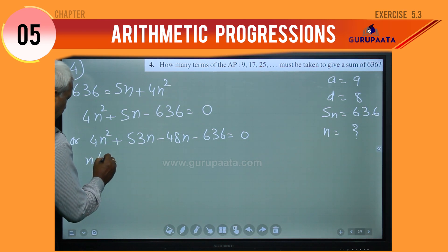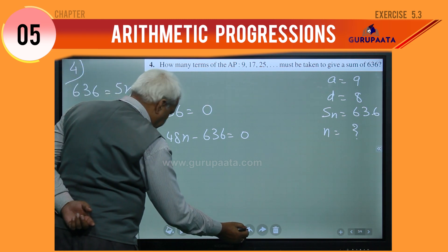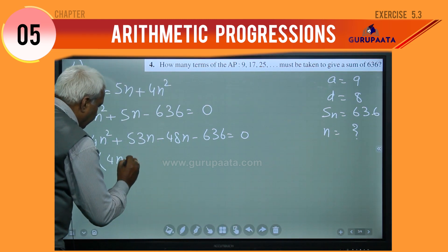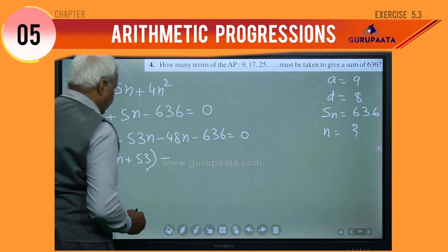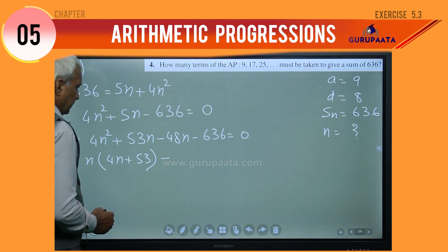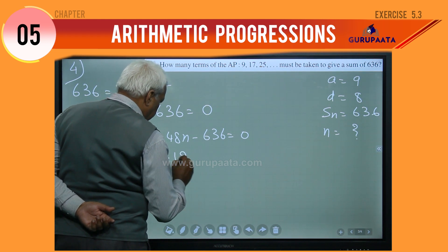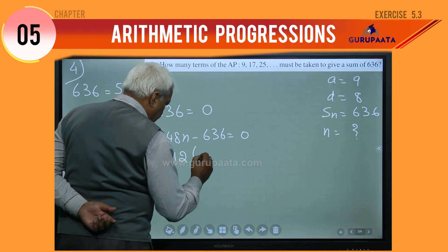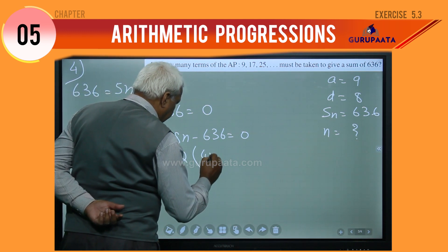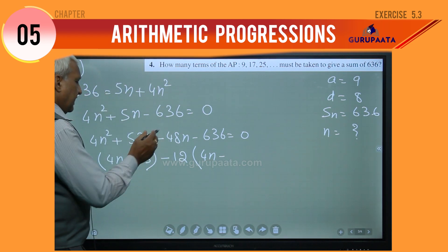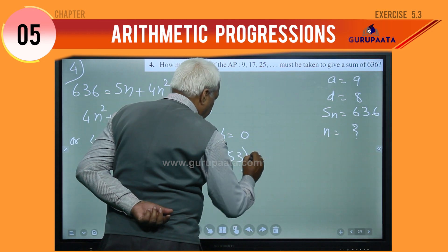We will take n common, so it will be n times 4n plus 53. Here we can take 12 common, so we can write minus 12 times 4n minus 53 equal to 0.